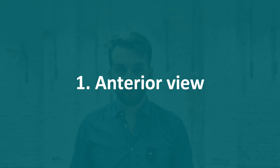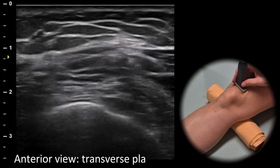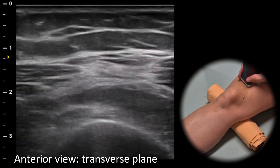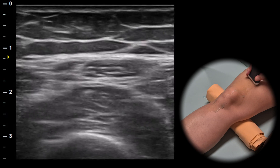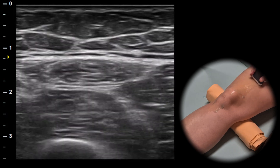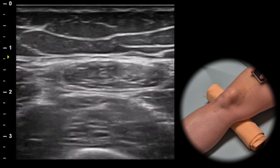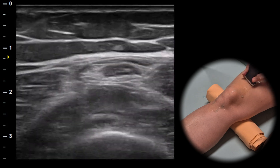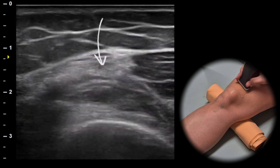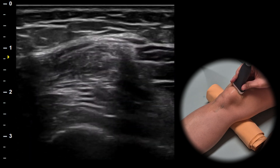The examination begins with the anterior view, starting in the suprapatellar area. In the transverse plane we can evaluate four parts of the quadriceps muscle: rectus femoris, vastus medialis, vastus lateralis and vastus intermedius. We can follow these muscles distally until they form a quadriceps tendon and attach to the patella.